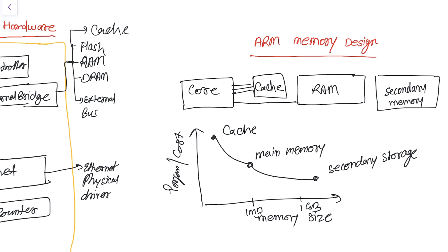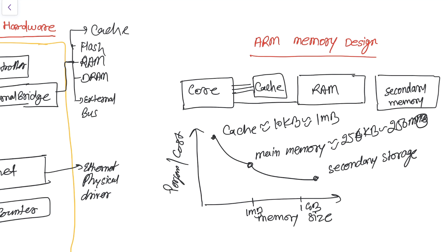Main memory is around 10 KB to 1 MB in general embedded systems, varying from 256 KB to around 250 MB. Secondary storage varies into the GB range of memory.